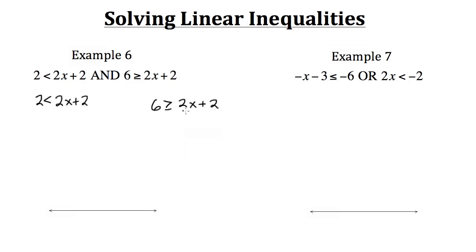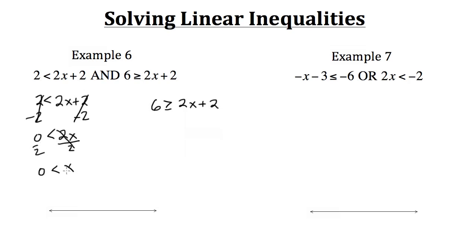Solving each one individually: for the first inequality, subtract 2 from both sides, giving 0 is less than 2x. Dividing by 2 gives 0 is less than x, or x is greater than 0.